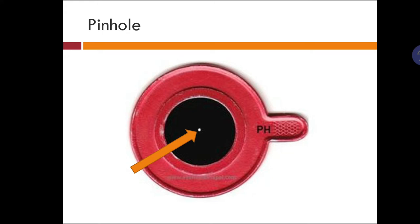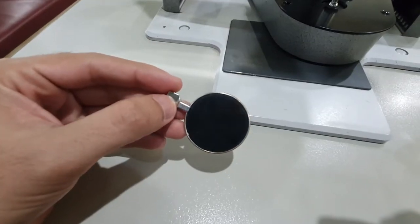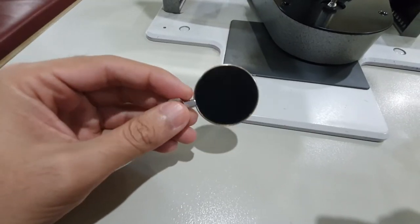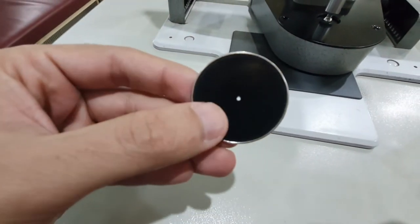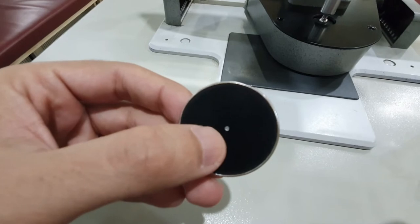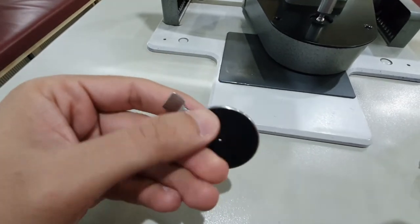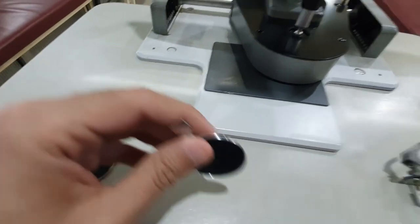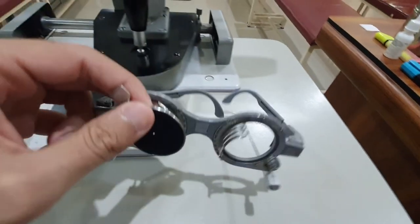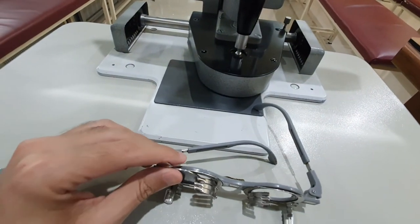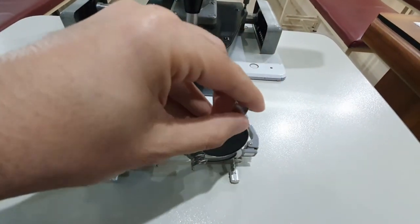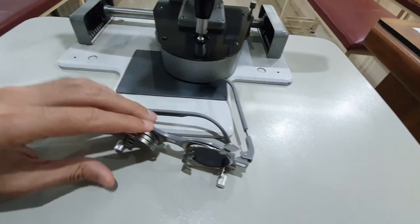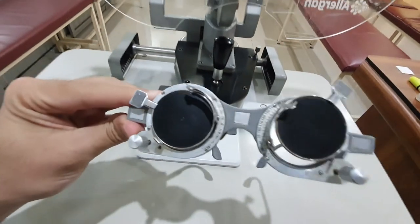How does this work? Look at this video. In this video you can see that in a trial frame we put a pinhole occluder in front of the eye we want to test, and a simple occluder on the other eye, and we check both eyes one by one.